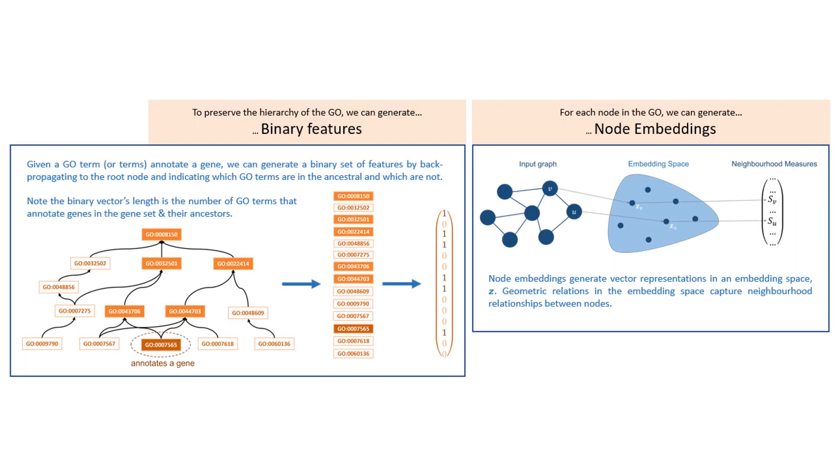In the next part of this poster, we note that we can generate two different types of features using the gene ontology. The first, on the left, are binary features which explicitly seek to capture the hierarchy of the gene ontology. We generate these binary vectors for each gene by denoting all the annotating GO terms and their ancestors with one, otherwise they're zero. Note that the binary vector's length is the number of GO terms that annotate all the genes in the gene set and their ancestors.